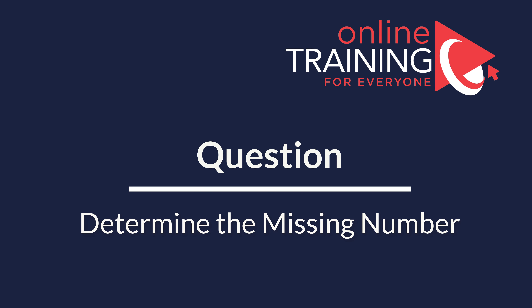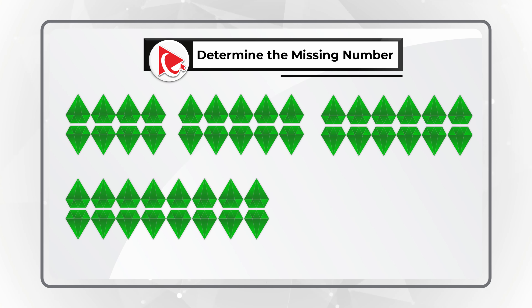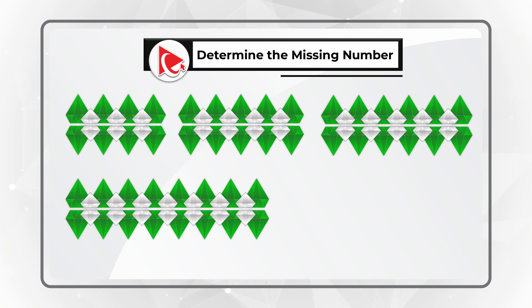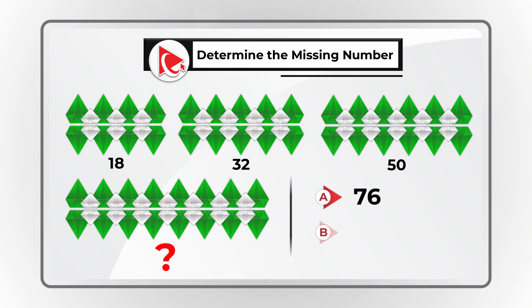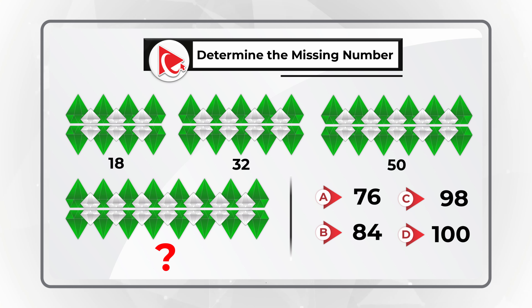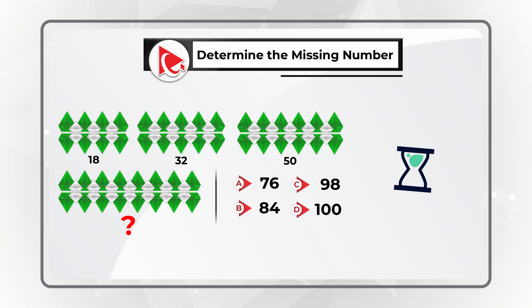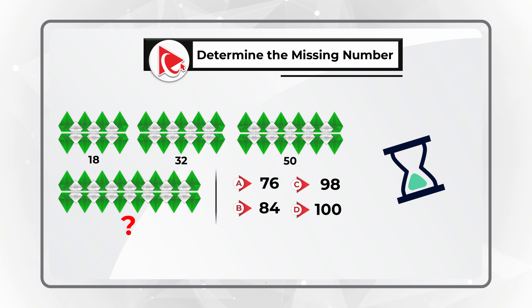Here is a very interesting problem which tests your analytical skills. You're presented with multiple diamond groups, each having green diamonds as well as grey diamonds. Underneath each diamond group there are numbers: 18, 32, 50, and then the missing number. You can select the missing number from four choices: A: 76, B: 84, C: 98, D: 100. Give yourself a little time — you can pause this video to find the solution.